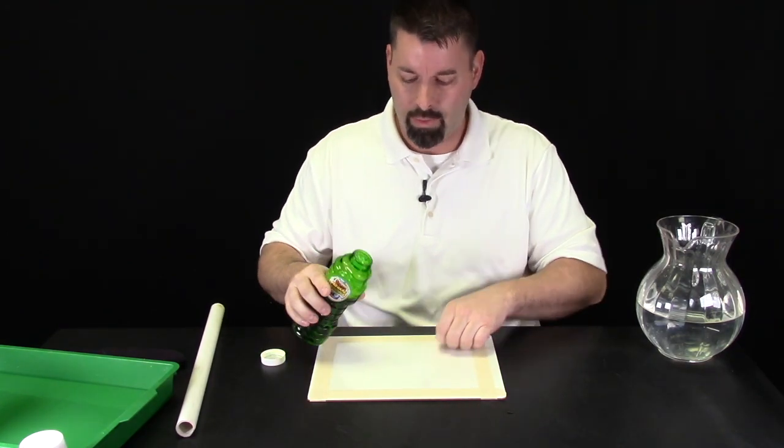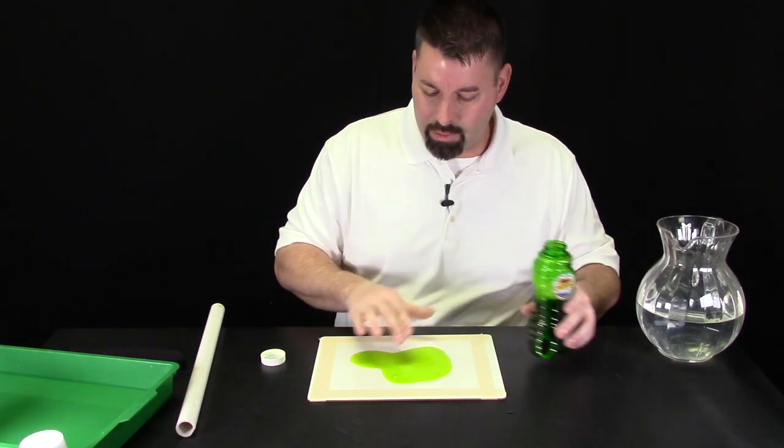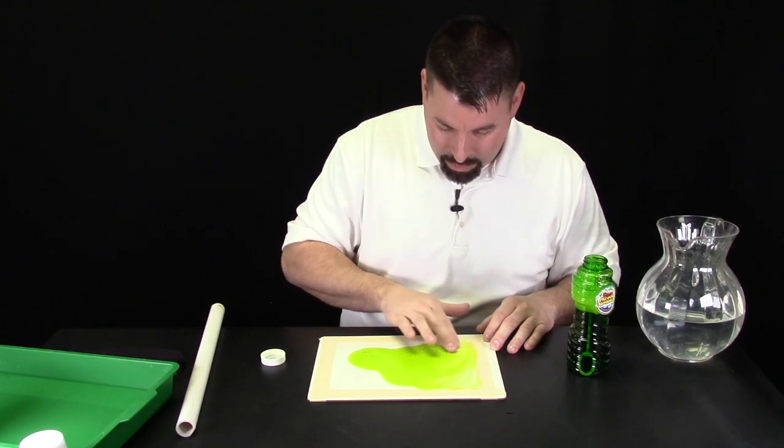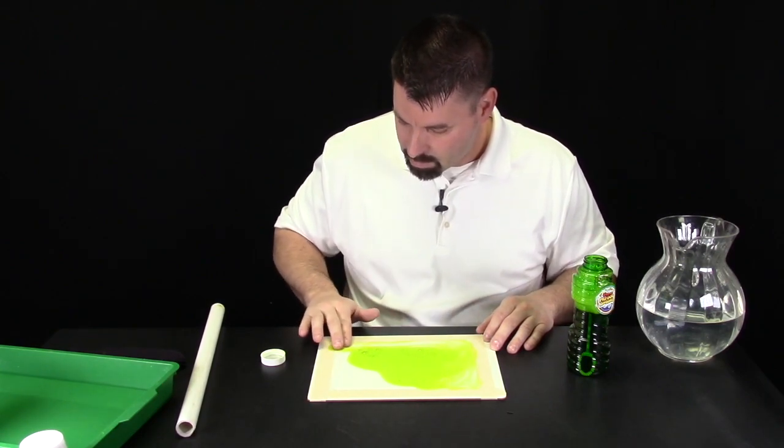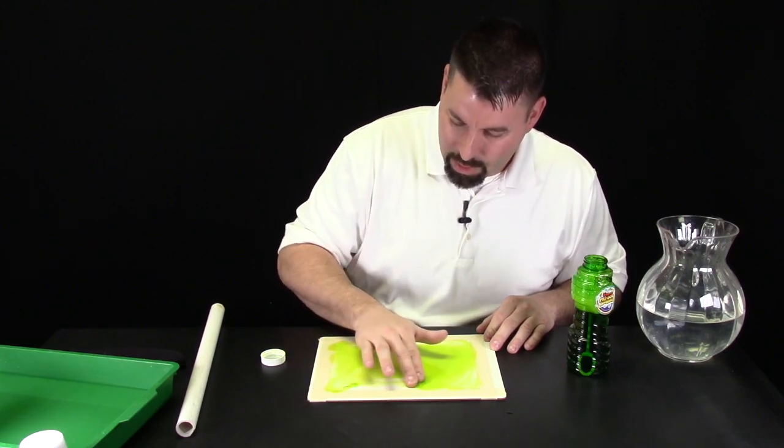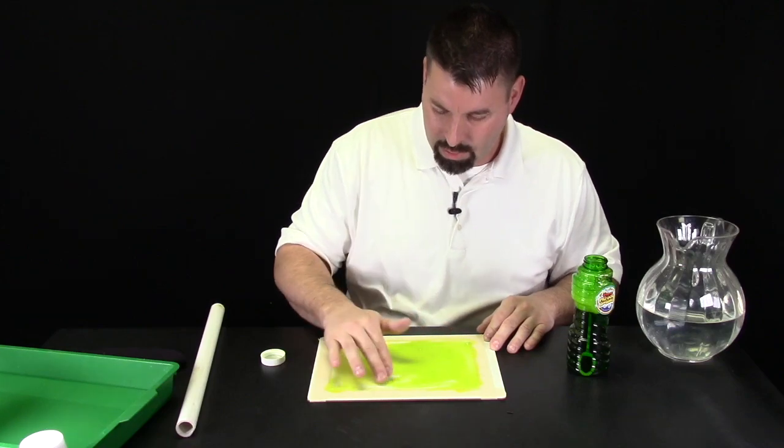Here we go. We're going to just pour a little bit out. Work it around with my hand to the edges to create my little skating rink. This is going to allow my bubbles to move all across the surface.